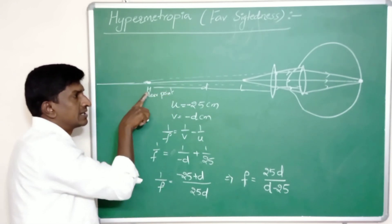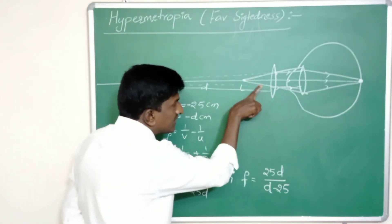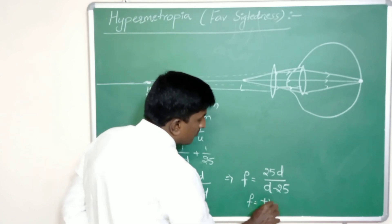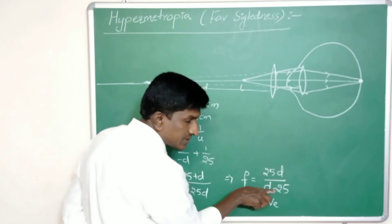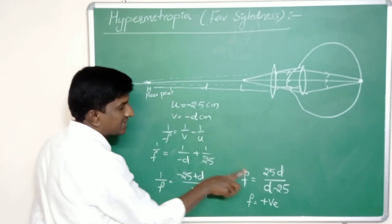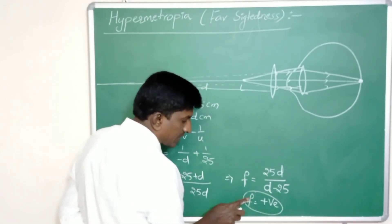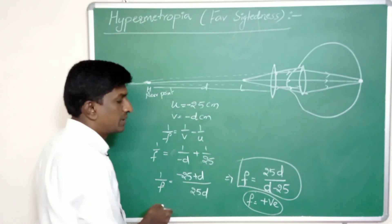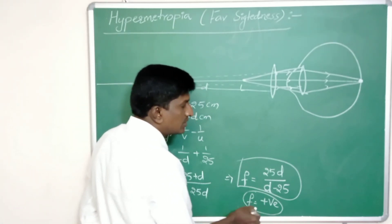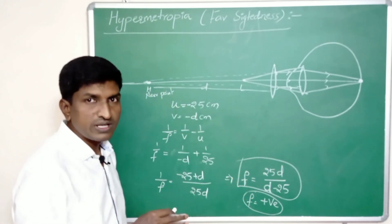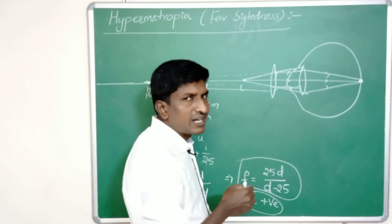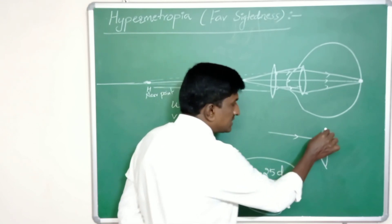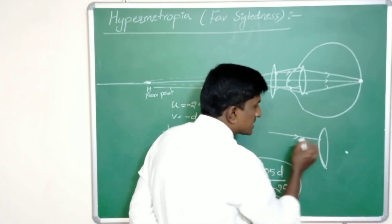We know that d is the distance of the near point, and d is greater than 25 centimeters. So d − 25 is positive, which means the focal length f = 25d/(d − 25) gives a positive value. This positive focal length confirms that the corrective lens is a convex lens, since a convex lens always has a positive focal length.